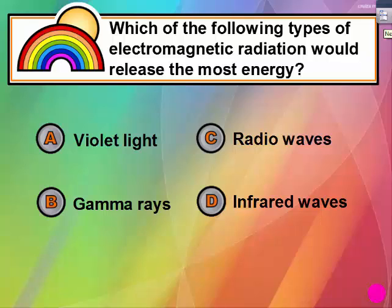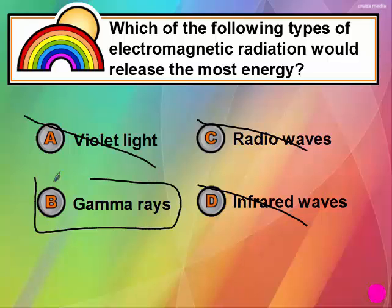Pause the video and try this one on your own. So, we're looking for the one that has the most energy. Radio is the lowest. Then infrared of this list. Then violet. Gamma rays have the most energy.